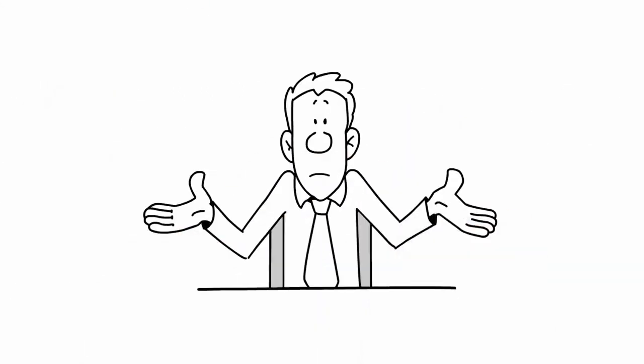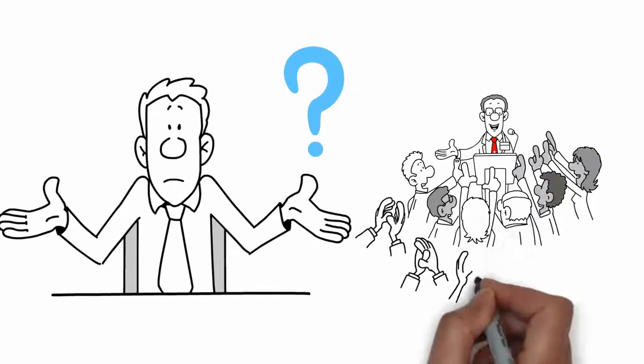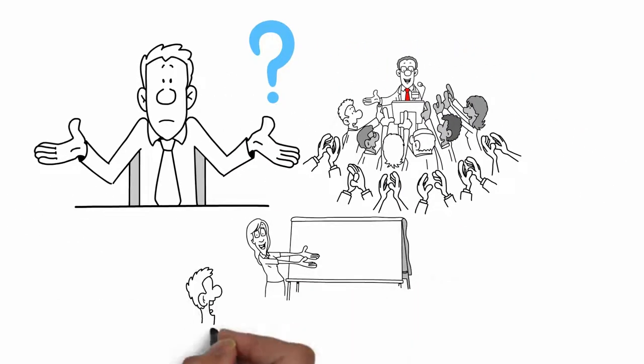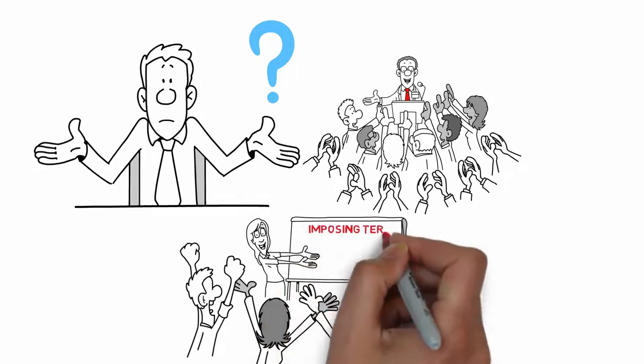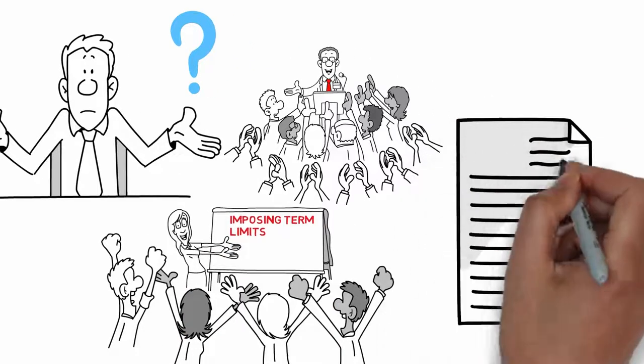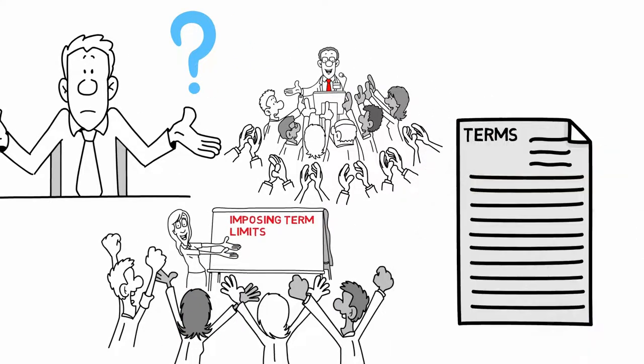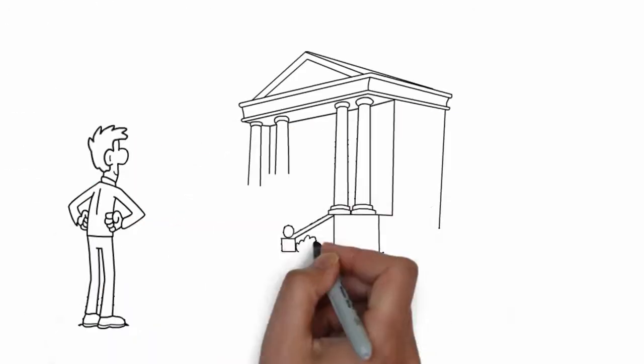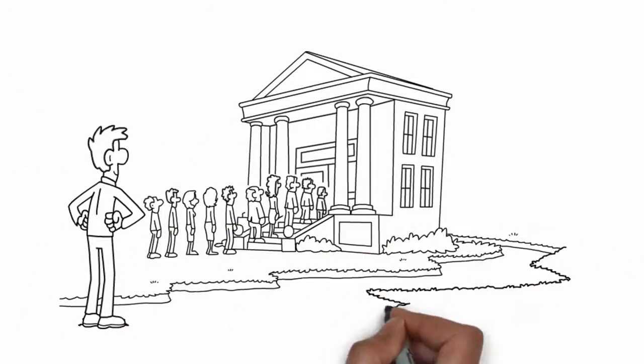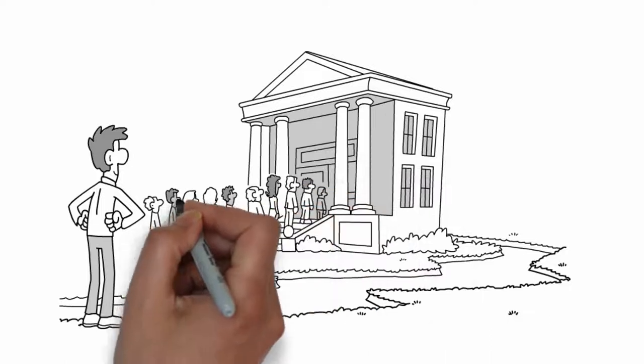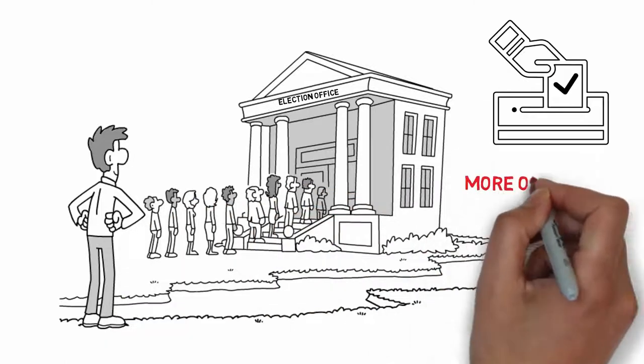So then, how can we encourage less partisan behavior from our elected officials? One idea that has received plenty of attention is imposing term limits, restricting the number of terms that a Senator or Representative can serve. The goal with term limits is that by taking away some of an official's concern about re-election, he or she will vote more objectively.